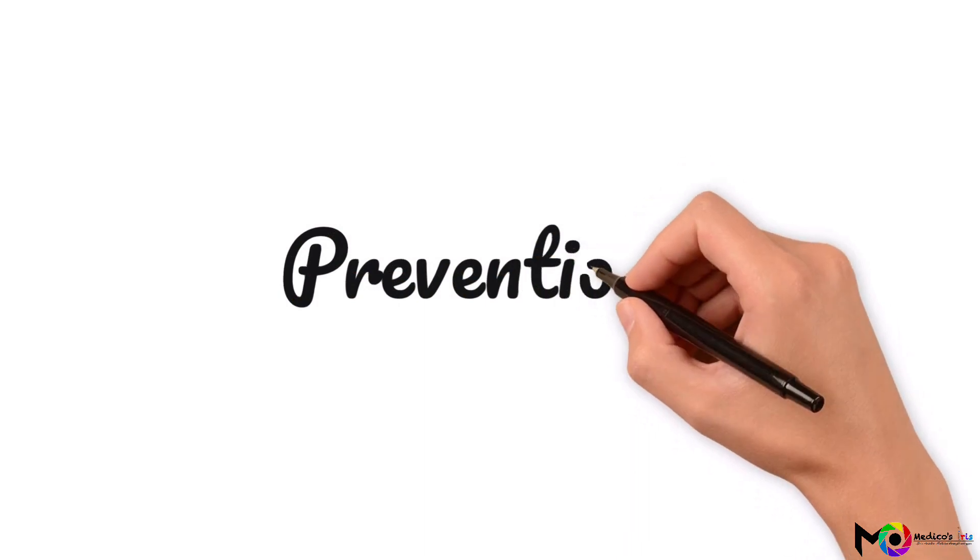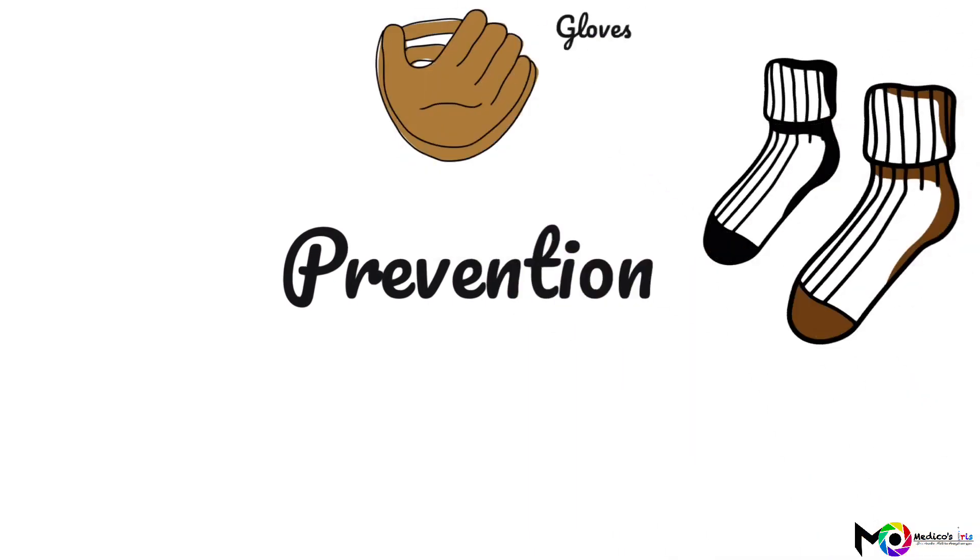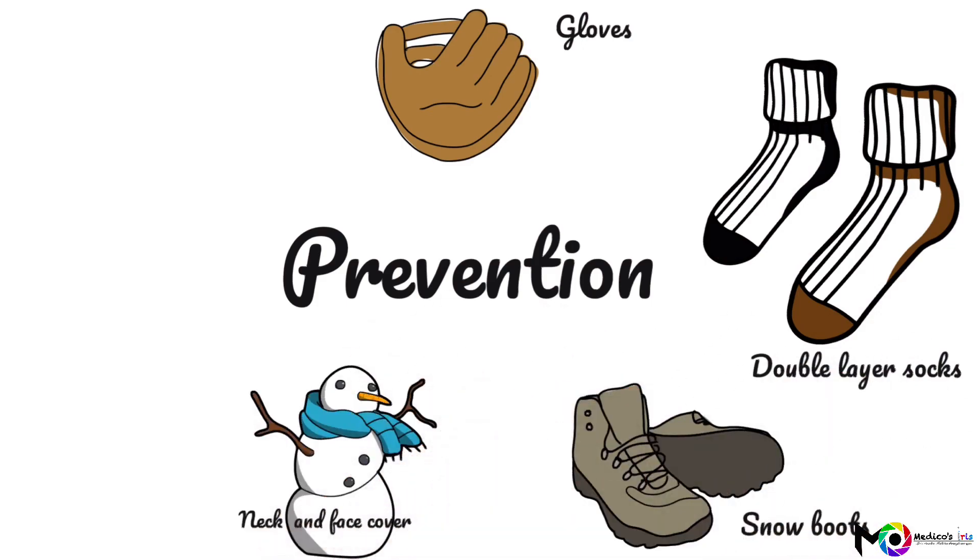As we know, prevention is better than cure. Let us see how we can prevent frostbite. Always take proper attire while going out in cold environments. First, wear gloves, double-layer socks, and snow boots. Cover your face and neck. Wear warm clothing in multiple layers.